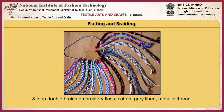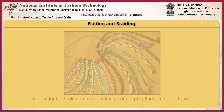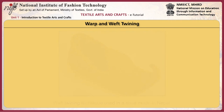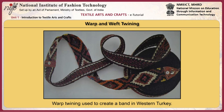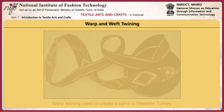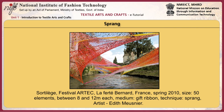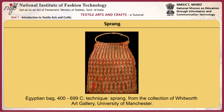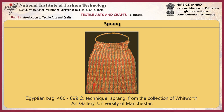This 8-lobed double braid embroidery is made of floss cotton, grey linen and metallic thread. A weft twining technique is used in a shoe made in Nepal. This band made in western Turkey uses a warp twining technique. This is an example of the sprang technique. An Egyptian bag using the sprang technique.